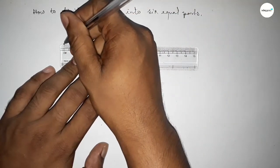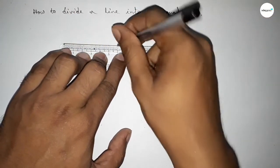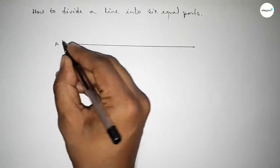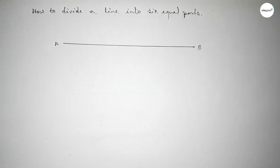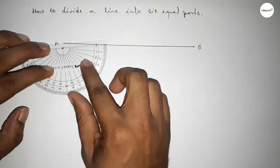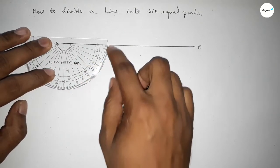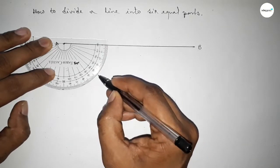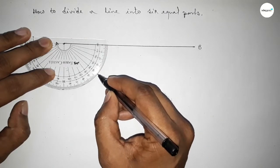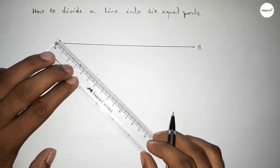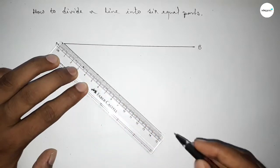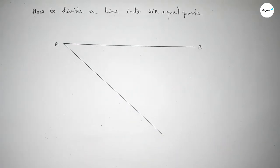First of all, we have to draw a line of any length, taking point A here and point B here. Next we have to draw an acute angle at point A, so putting the protractor on point A and taking an acute angle — here taking 40 degrees, but you can take 50 or 30 degrees as well.